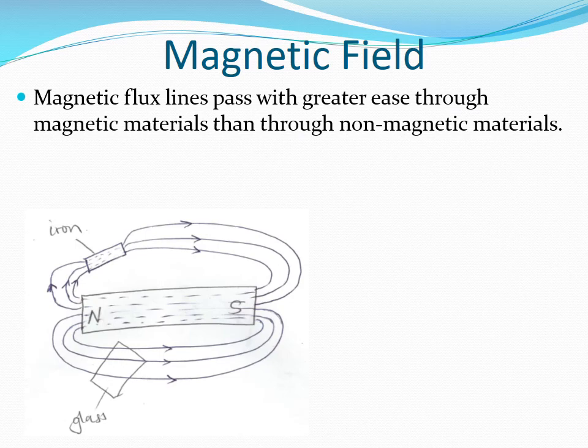Magnetic flux lines pass with greater ease through magnetic materials than through non-magnetic materials. If we place a piece of a magnetic material like iron in a magnetic field, we will find that the flux lines are going to be distorted. The distortion is due to the fact that the iron is diverting and concentrating the lines so that the bulk of them pass through it. If we place a non-magnetic material like glass in a magnetic field, there won't be any distortion, because the ease with which the flux lines pass through the glass is the same as through air or space.